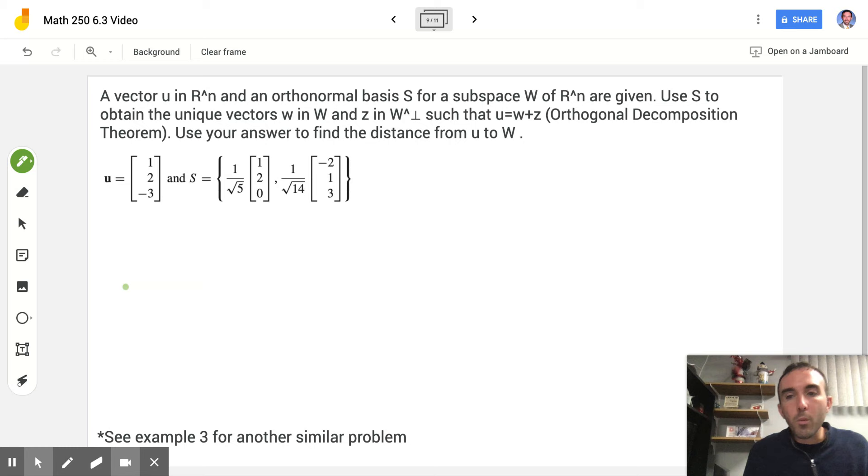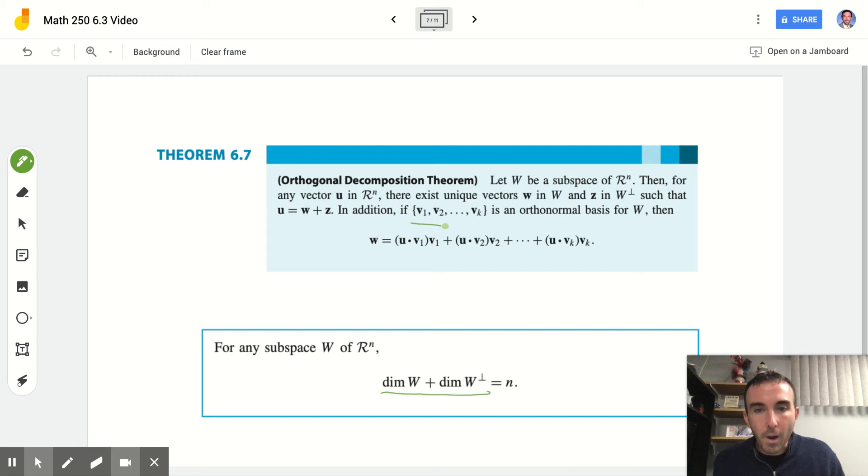So now we are given that a vector u in R^n and a given orthonormal basis s for subspace W of R^n are both given. So lucky for us, we don't have to do that heavy lifting. It's provided up front. We are going to use s to obtain the unique vectors w in W and z in W perp such that u is equal to w plus z. That is our orthogonal decomposition. And then we're going to use our answer to find the distance from u to W. So just looking back to our previous slides here, by orthogonal decomposition, since we only had two vectors, we're going to use this first part here to determine our vector of interest, w.